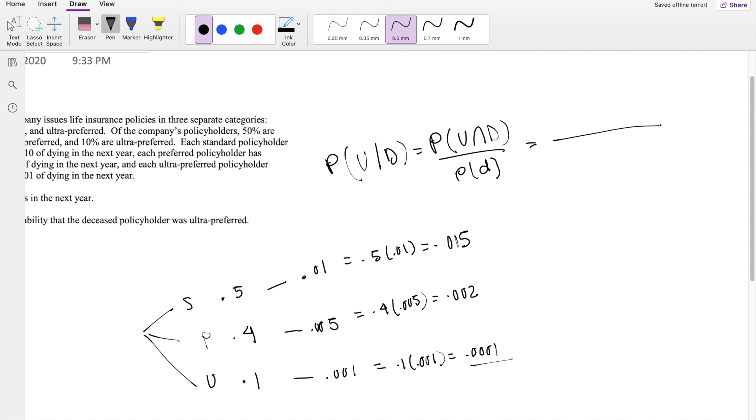So the probability that they die next year is adding up all these values together, 0.005 plus 0.002 plus 0.0001.